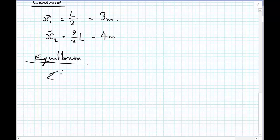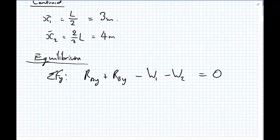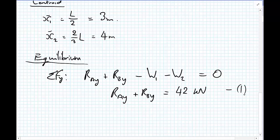First, sum of the forces in the Y direction. I have RAY plus RBY minus W1 and minus W2, because they're pointing downwards, equals 0. And I can then get that RAY plus RBY equals 42 kilonewtons. Now I still have two unknowns in this equation, so I'll label this equation 1 so that I can use it later.